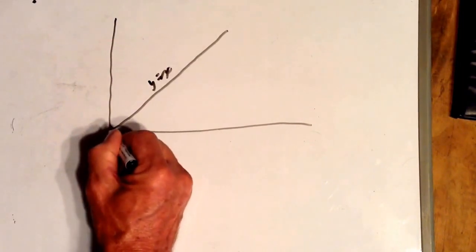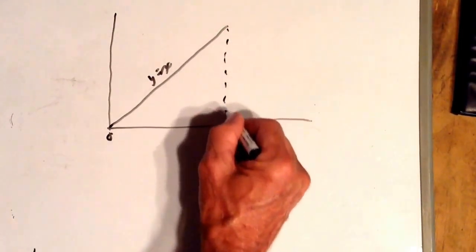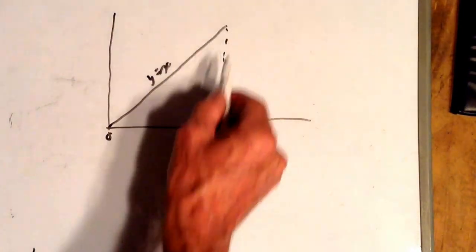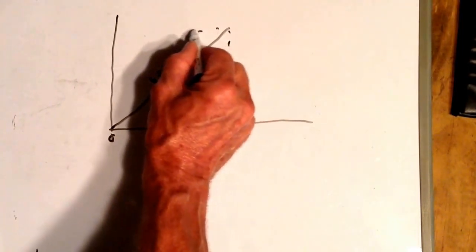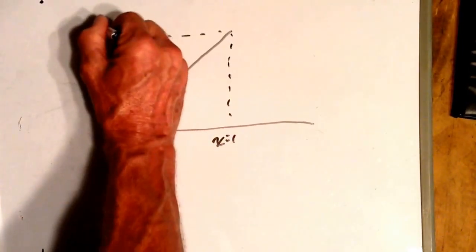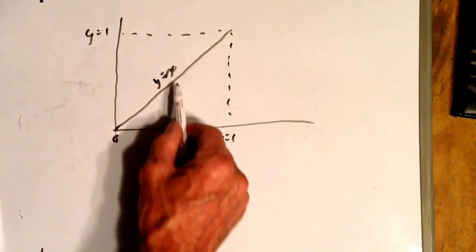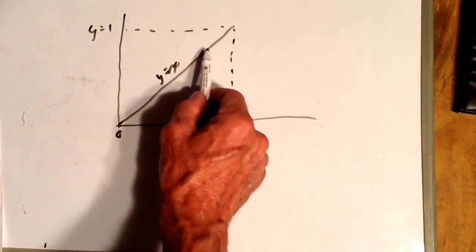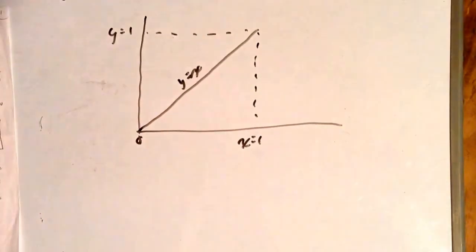Let's say this is 0 and this is x equals 1. So if x is equal to 1, then y is equal to 1 because y is equal to x. So we draw a dotted line over here and say y equals 1. If x is 1 half, y is equal to 1 half. If x is 0.70352, then y is 0.70352. Whatever x is, that's what y is.